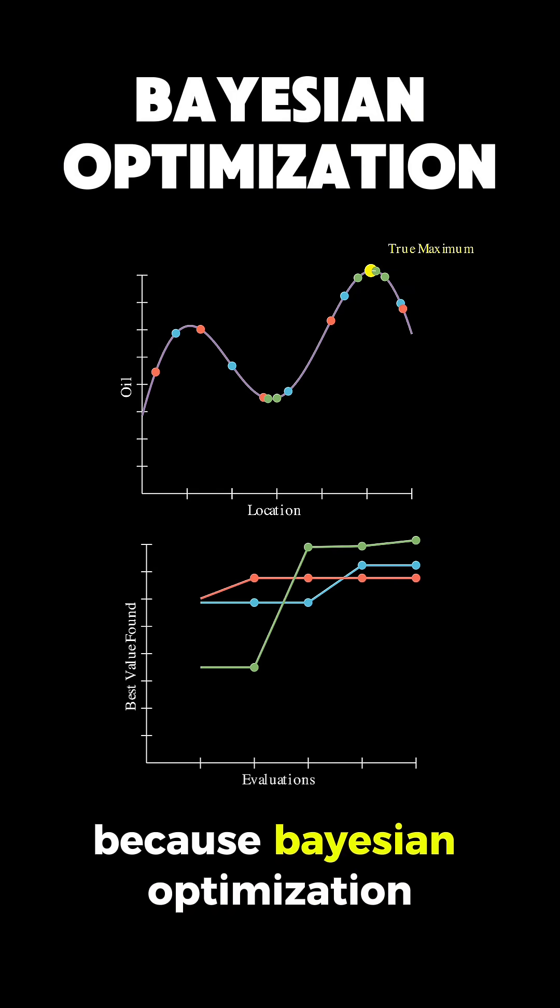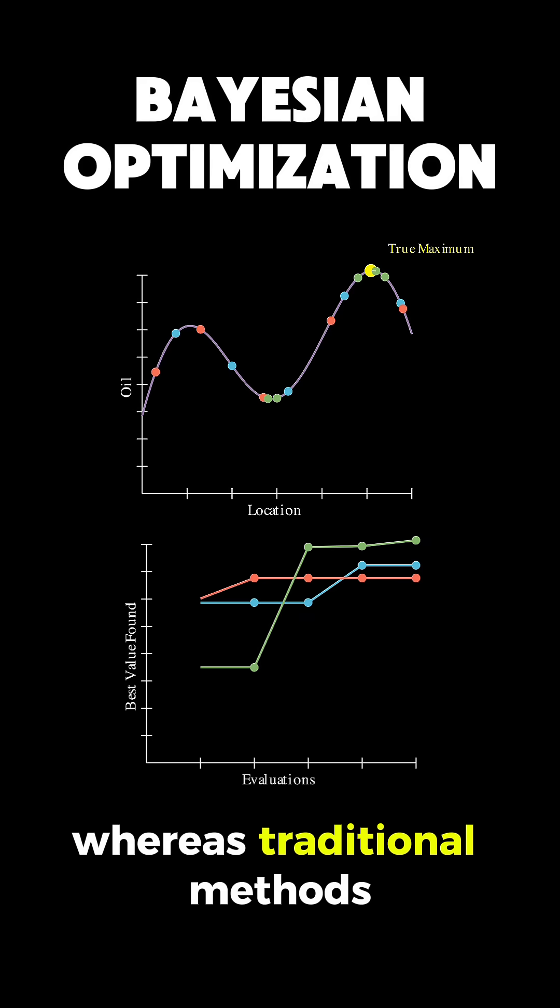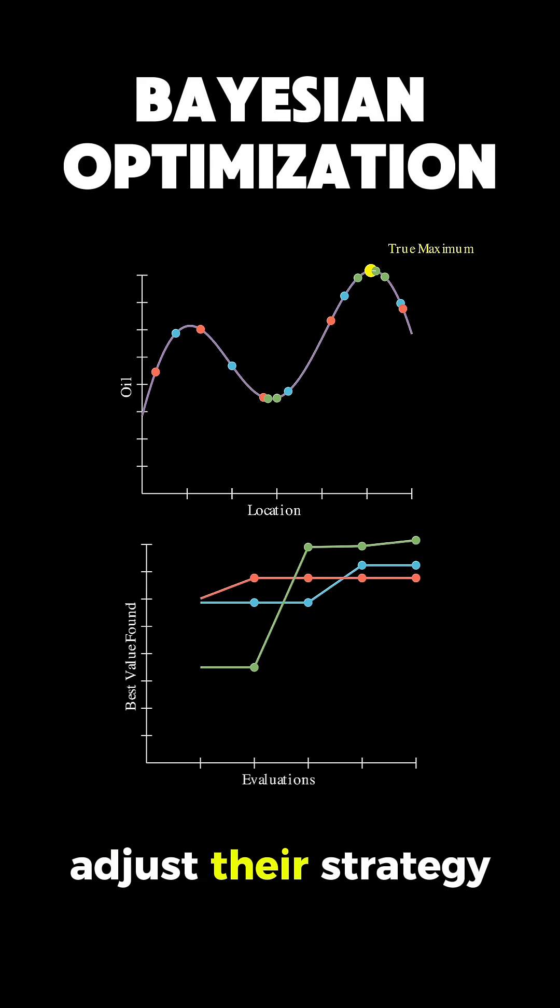And this happens because Bayesian optimization learns from each new data point, whereas traditional methods don't adjust their strategy based on previous findings.